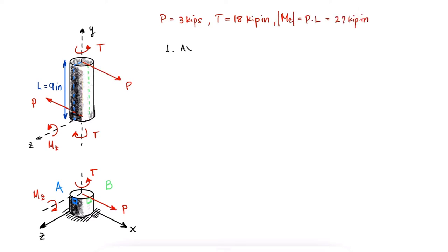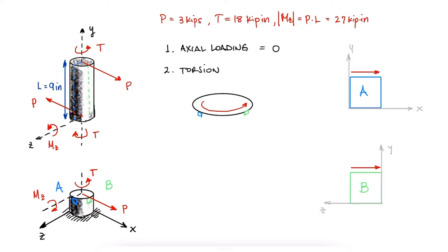Looking at the cross section at the cut, we see that there are no normal internal forces. The internal torque T causes a torsional shearing stress on the top faces of both A and B. By bringing mz closer to the surface, we see that A is on the neutral axis of the bending and B is subjected to compression.